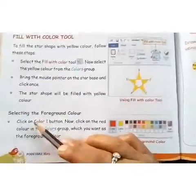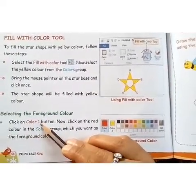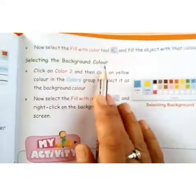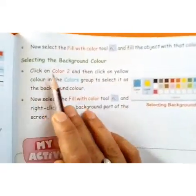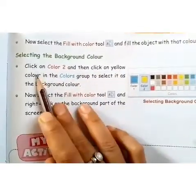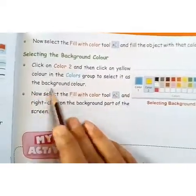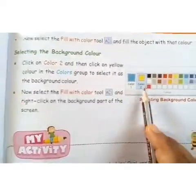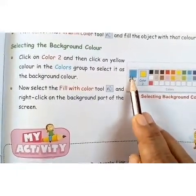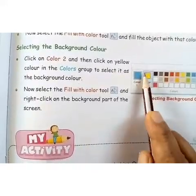Next is selecting the background color. Click on Color 2 and then click on the yellow color in the colors group to select it as the background color. Color 1 is the foreground color which you will fill inside the object, and Color 2 is the background color.